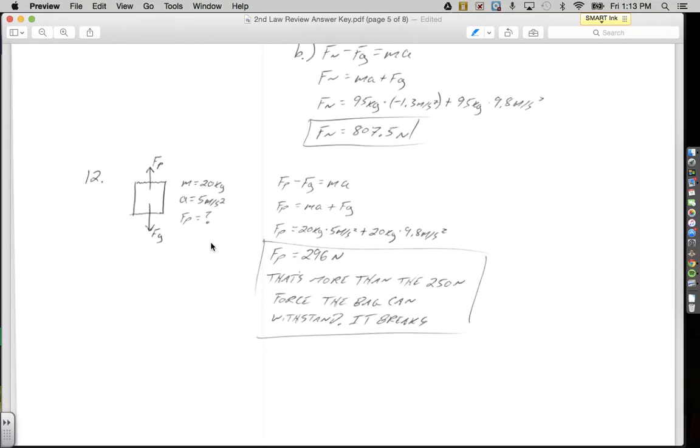Number 12. We're going to be lifting a grocery bag up off of the ground. The maximum force that the grocery bag can withstand is 250 newtons. We're going to accelerate 20 kilograms of groceries at a rate of 5 meters per second squared. We want to know how hard do we have to pull up on the grocery bag to make this happen? A lot of people want to just plug 250 newtons in for force of pull, but you can't do that.